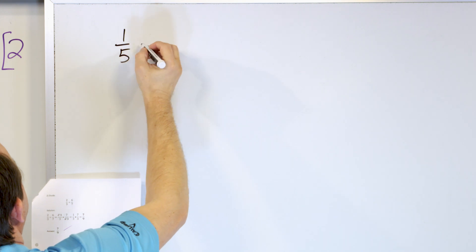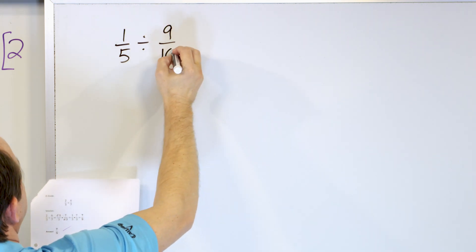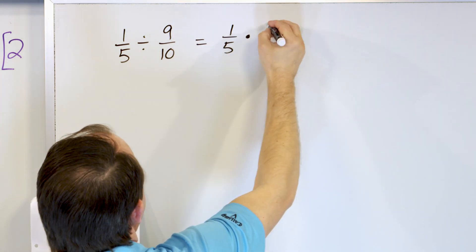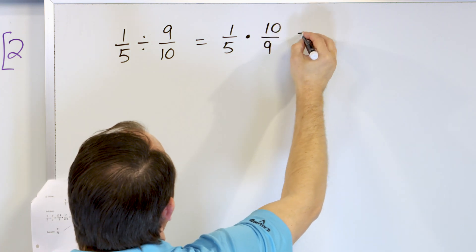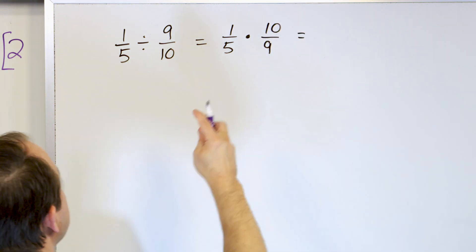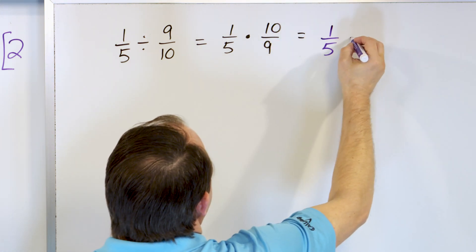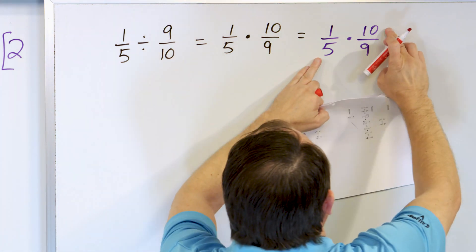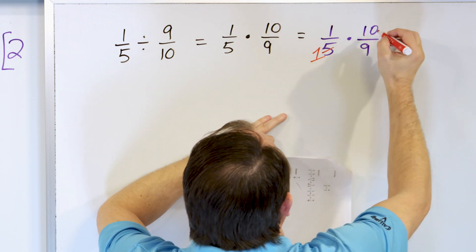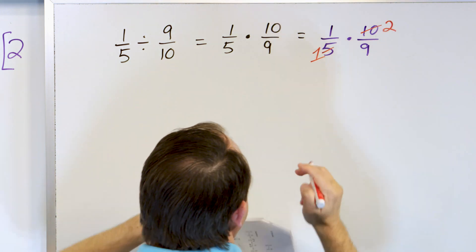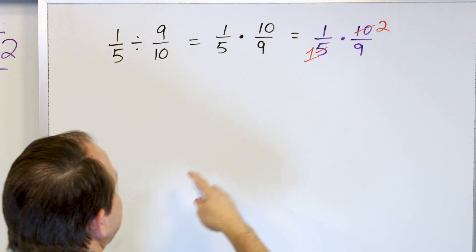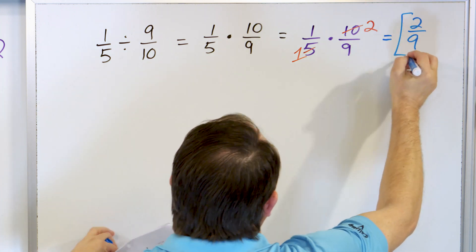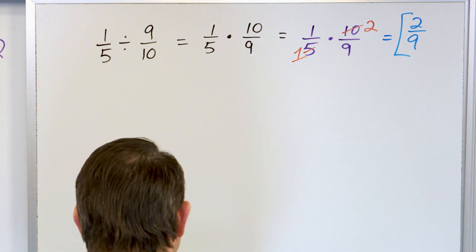Next: one-fifth divided by nine-tenths. We take the one-fifth, write it down. The division changes to multiplication, and the second fraction flips over to ten-ninths. Rewriting: one-fifth times ten-ninths. Looking for something to pre-simplify — I see the five and the ten; divide by five: five divided by five is one, ten divided by five is two. Then multiply: one times two is two, one times nine is nine. The answer is two-ninths, and there's nothing further to simplify.